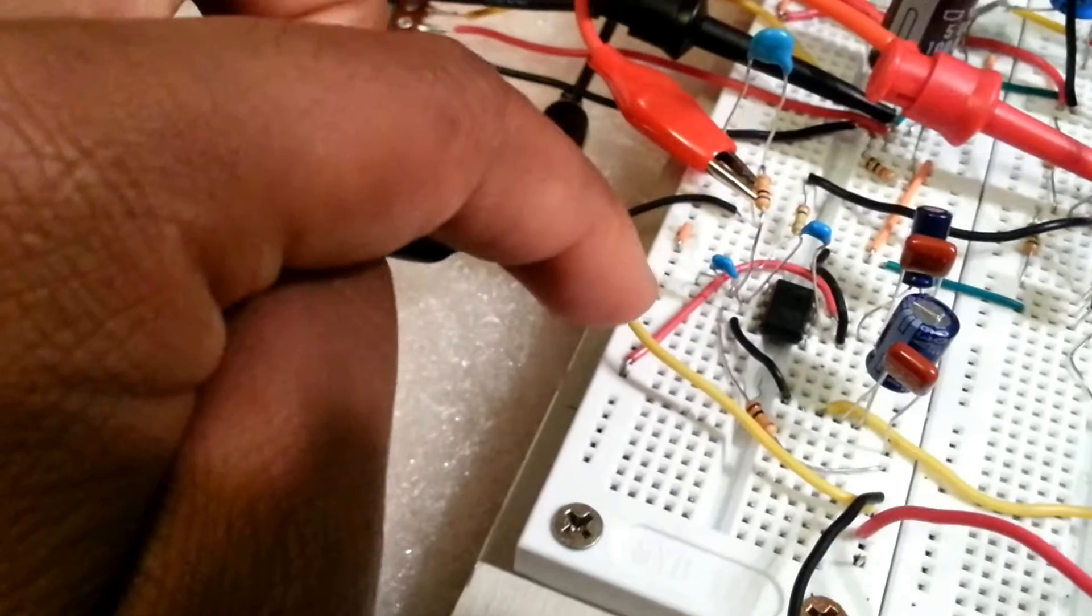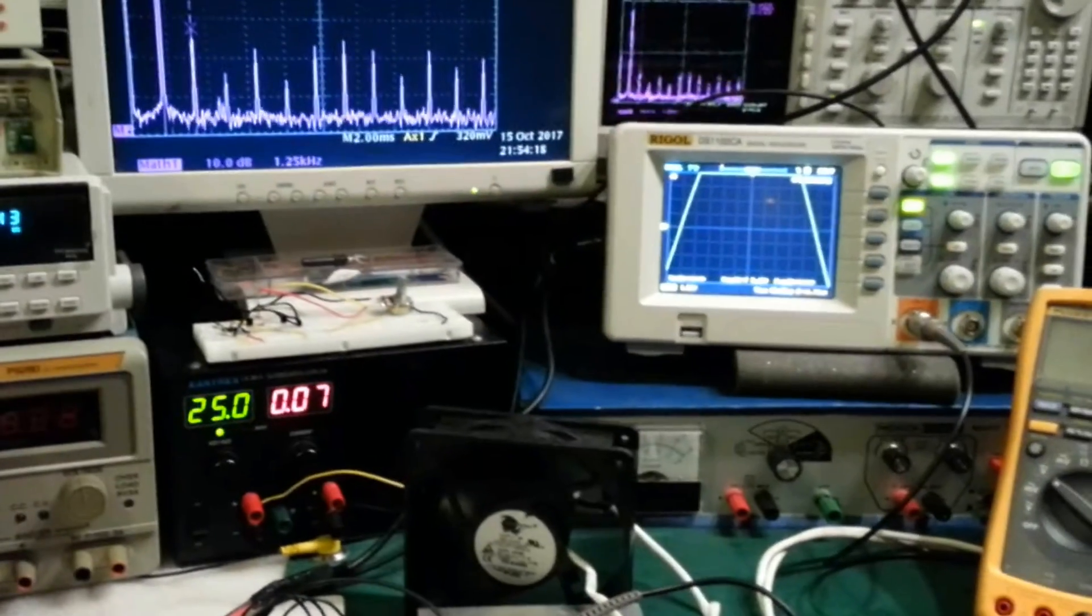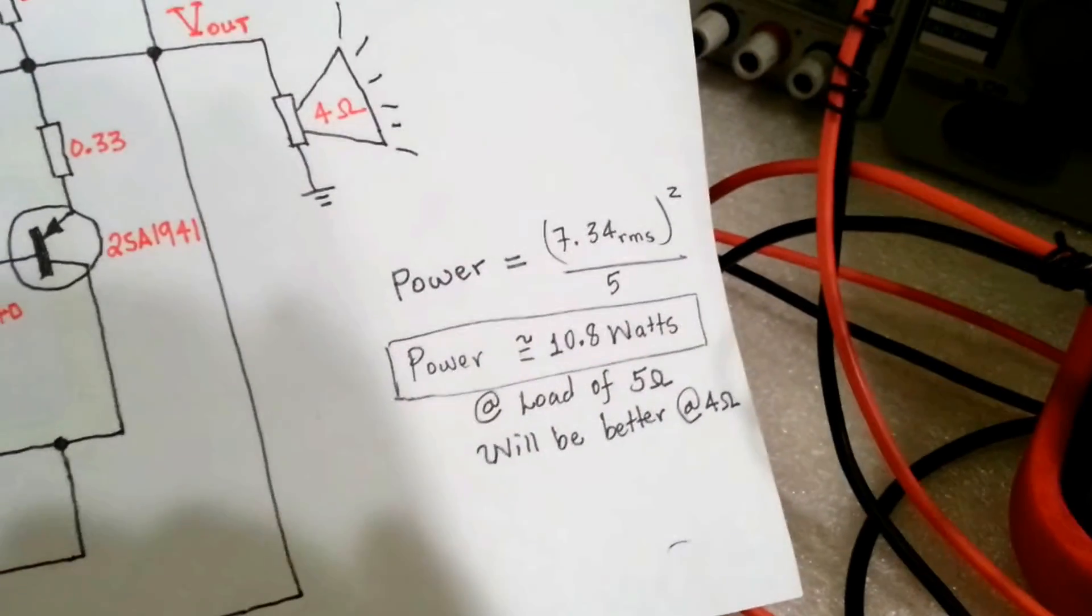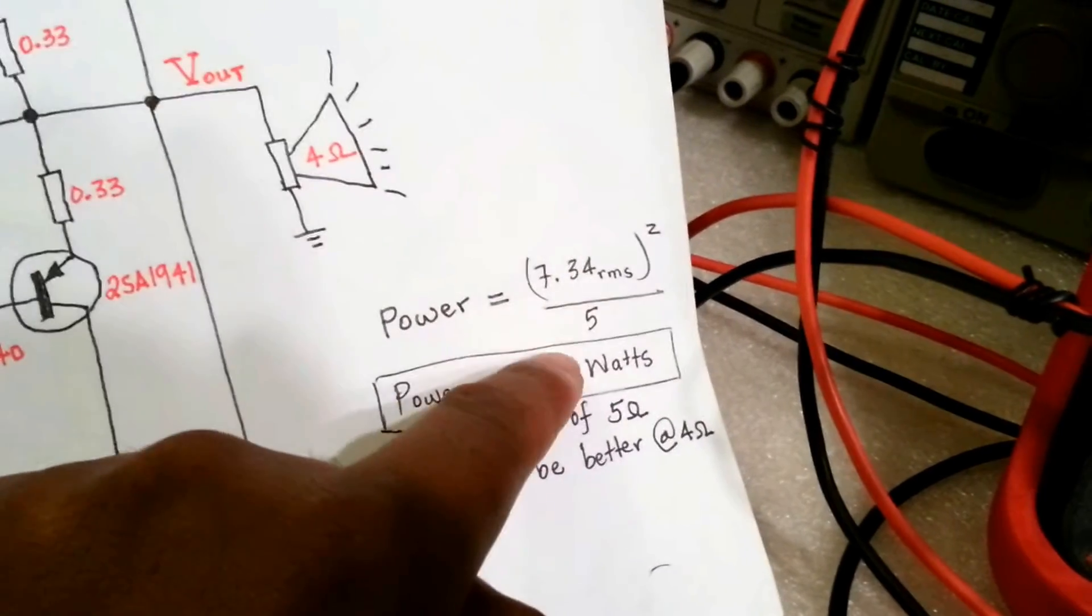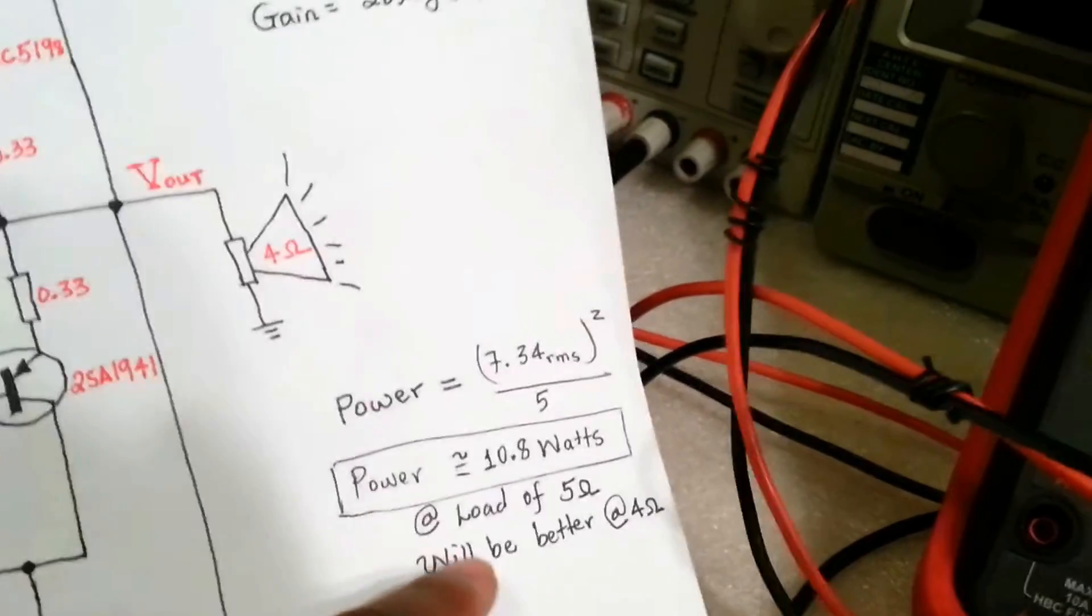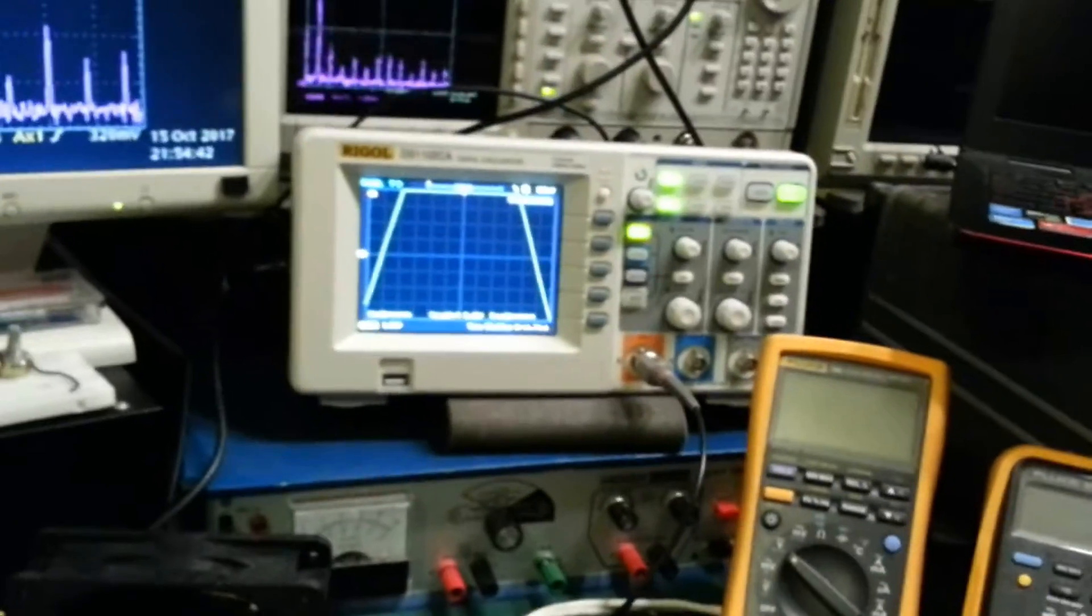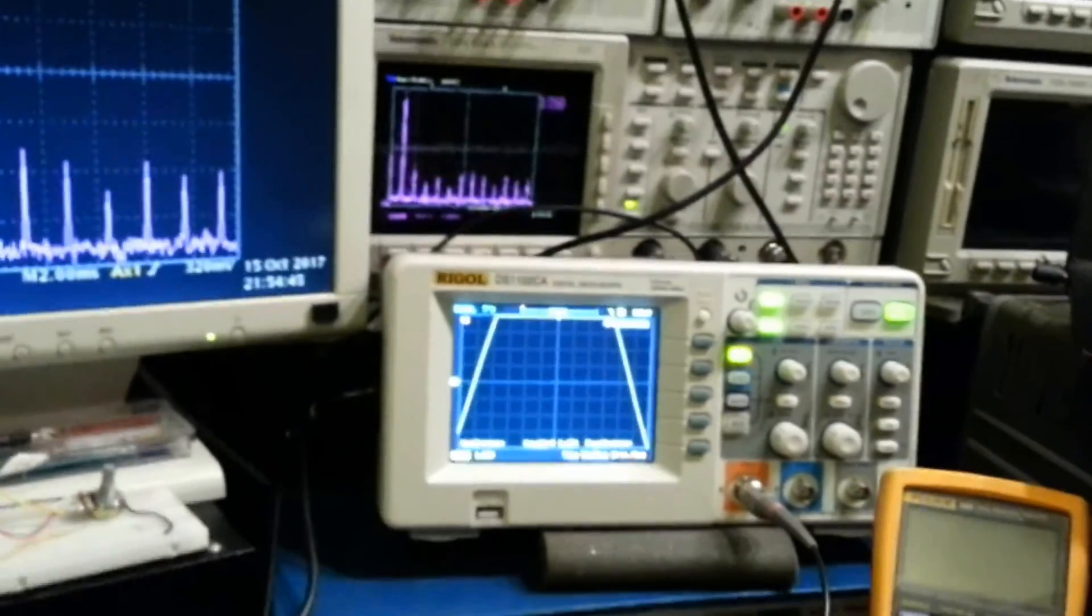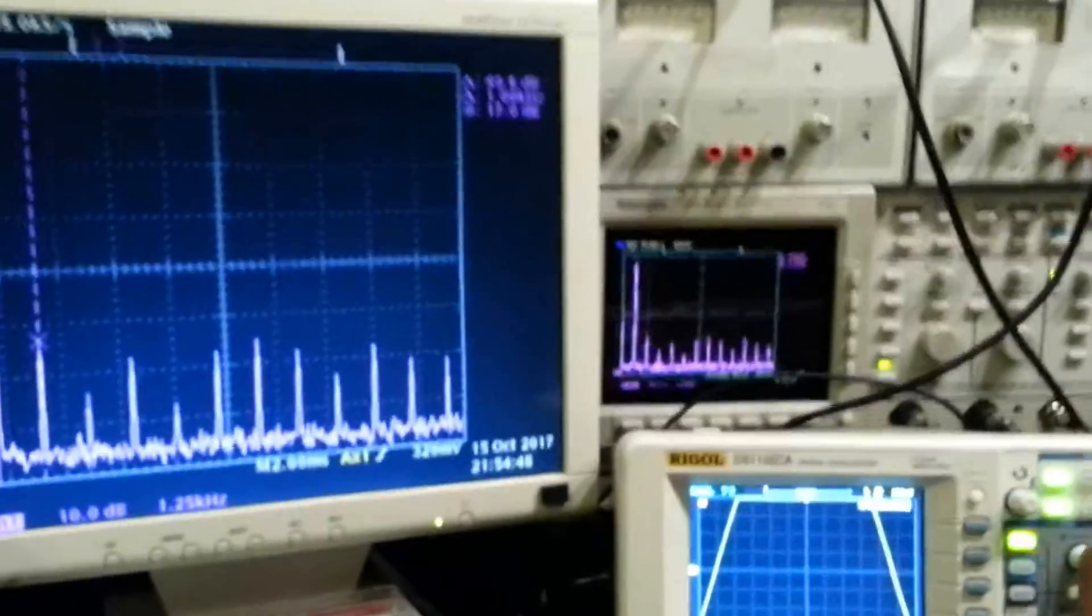How does this sound? We're gonna test it for sound. Let's see the calculation for power output. The power output is right there, 7.34 RMS into 5 ohms. Square that you get around 10.8 watts. So we're able to output 10, if we attach a 4 ohm load, my speaker is ready, my speaker is right here. So I'm gonna put that in there and then I'm pretty sure we'll be able to get a much higher output power.